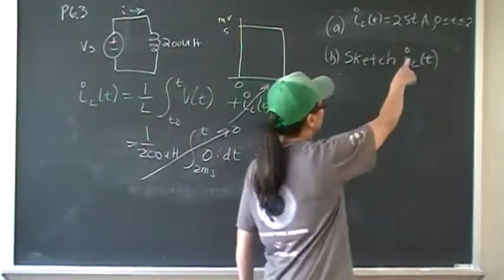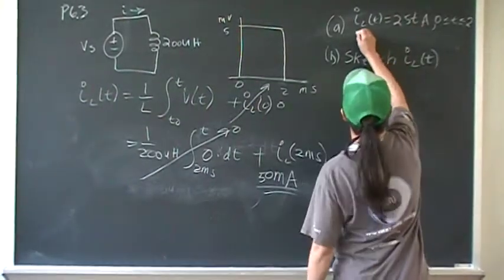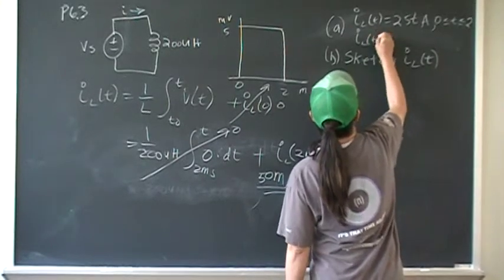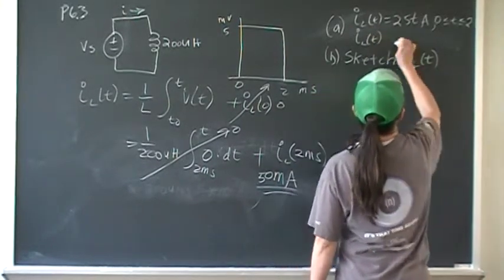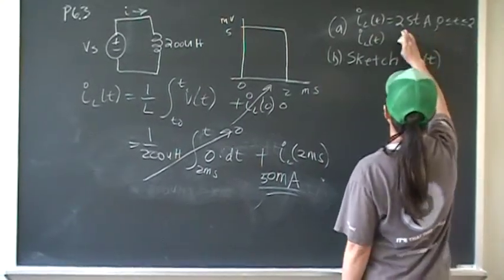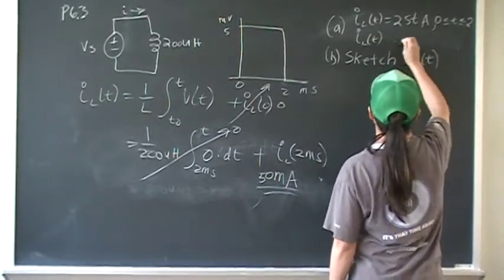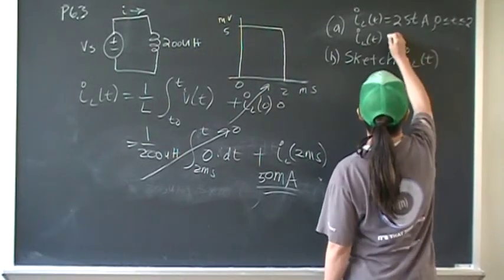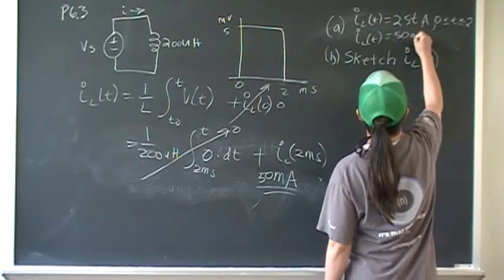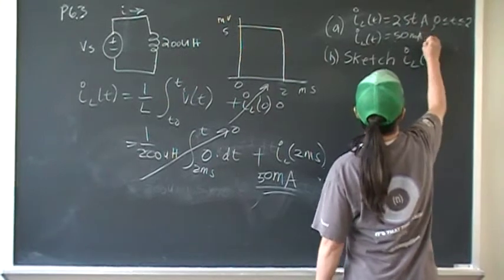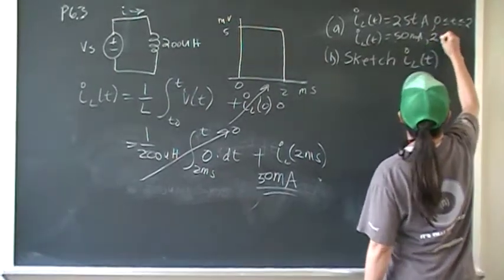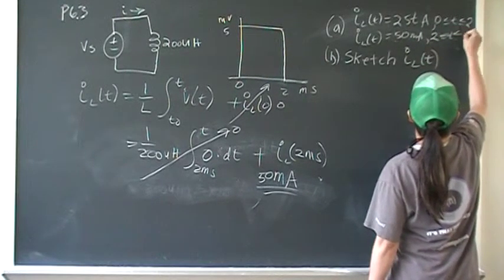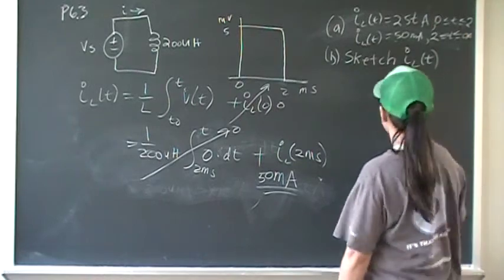So IL(T) is a piecewise function: 25T amps from 0 to 2 milliseconds, and 50 milliamps from 2 milliseconds onward.